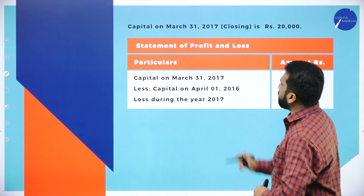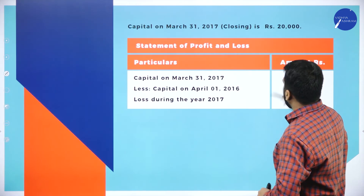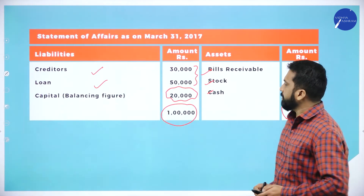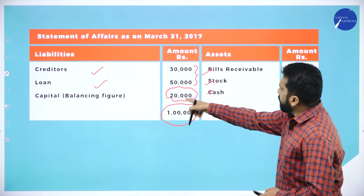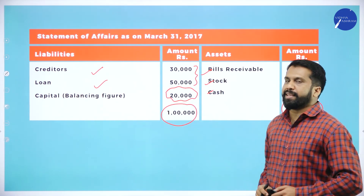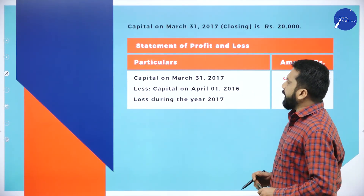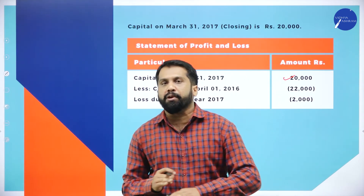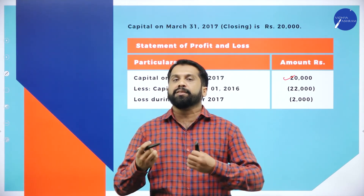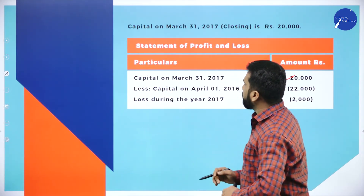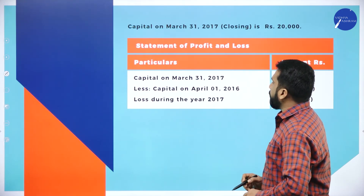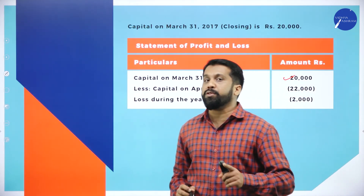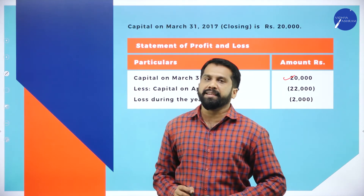For the profit and loss account: closing capital is 20,000 — that's what we found. In this problem, drawings are not given, so nothing to be added. We need to subtract the opening capital, but the question does not directly mention opening capital anywhere. How do we find it?